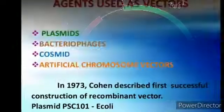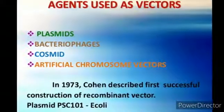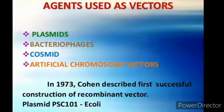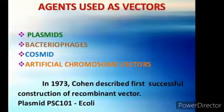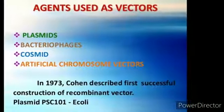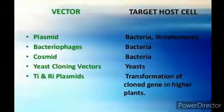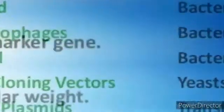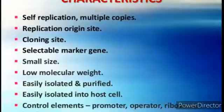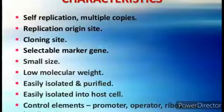When vectors are used for multiplying the foreign DNA sequences, they are called cloning vectors. Examples include plasmids, bacteriophages, cosmids, and artificial chromosomes.